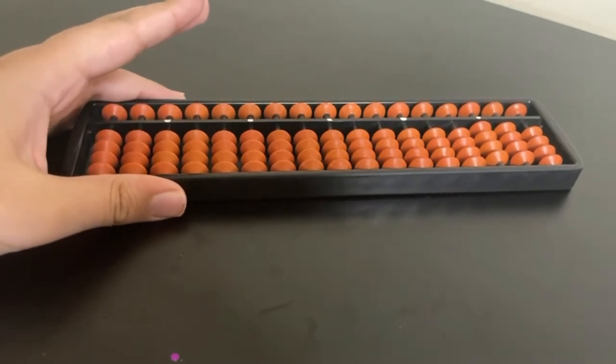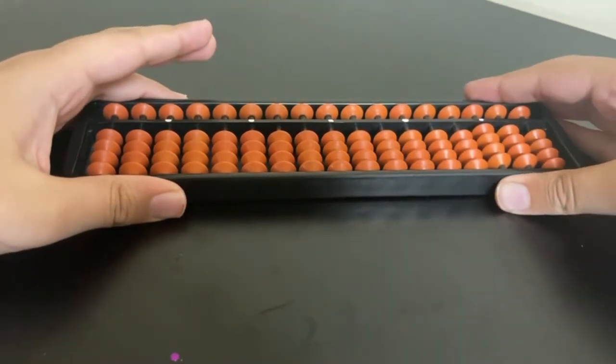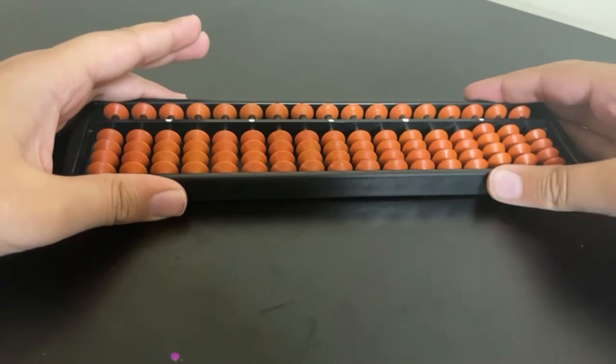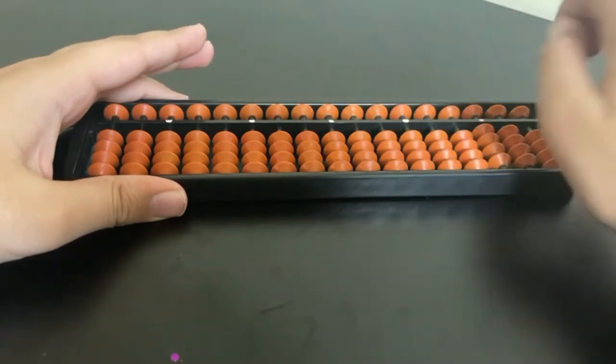Now for your right hand, all you're going to do is hold the abacus from this side, the thumb on the other side and all other fingers holding it from here. But you will sometimes need to move it to arrange your beads.